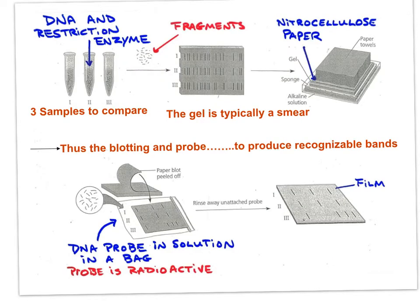Here is one last image describing the southern blot technique. Three sets of DNA fragments are separated using gel electrophoresis. The gel is then put into contact with nitrocellulose paper that picks up the molecules from each fragment. The blot paper is removed and washed with a radioactive probe to produce bands that correlate with the probe. Remember that probes are short, known sequences of bases.